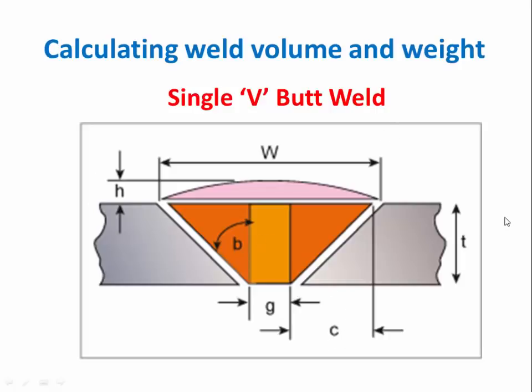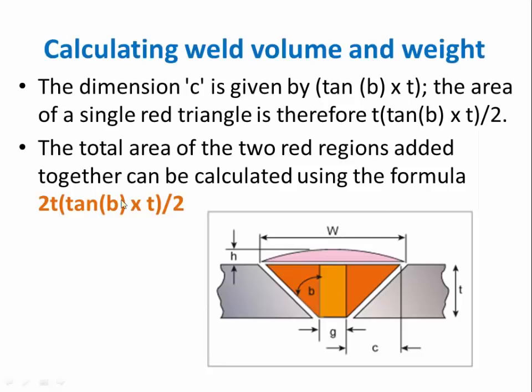How do we calculate this area? We can calculate the volume. From volume we will get the weight of the welding metal. This is one of the formulas to find the area: 2(tan B × T) divided by 2.